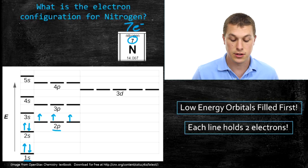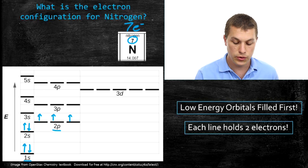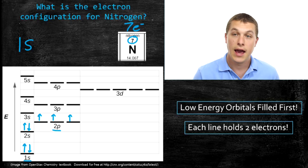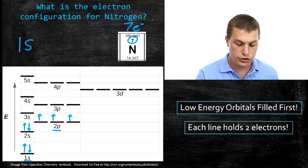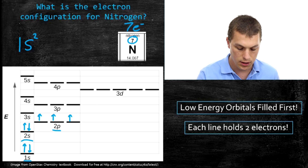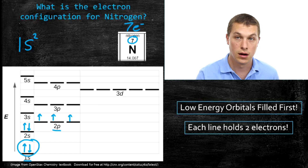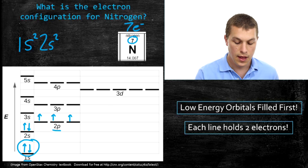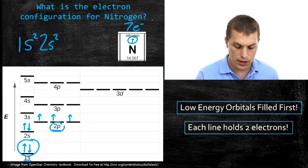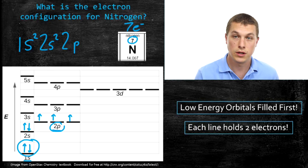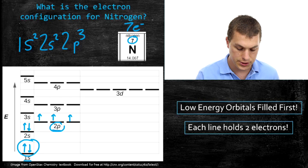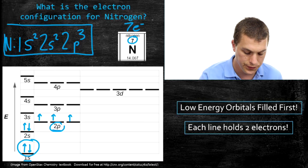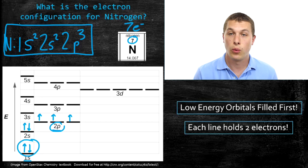Every time you want to tell somebody where your electrons are, you don't want to draw this giant graph. Instead, you write out an electron configuration. First you write the orbital — the very first electrons are in the 1s orbital — and then above the s, you write how many electrons are there. There are 2 electrons in the 1s orbital. The next orbital as we continue up in energy is the 2s, and that fills with 2 electrons. The next orbital we filled was the 2p, which has 3 electrons. So the electron configuration for nitrogen is 1s², 2s², 2p³. We just use the graph as a tool to figure out the electron configuration.